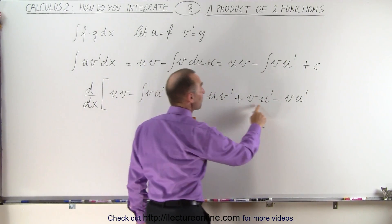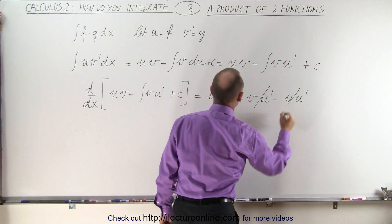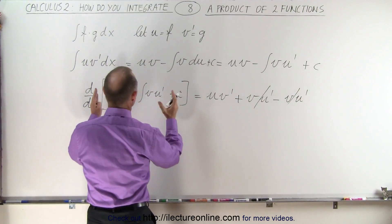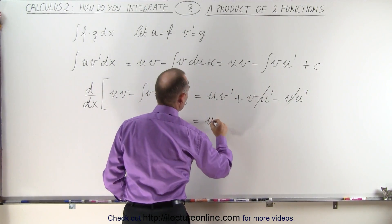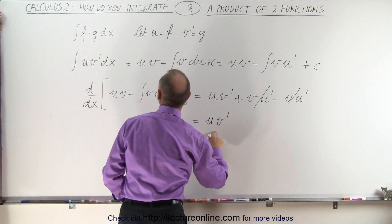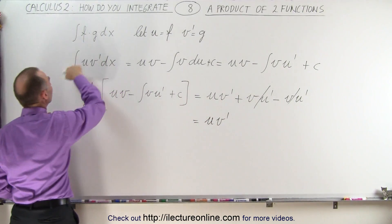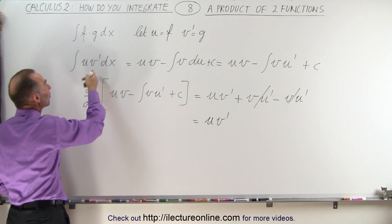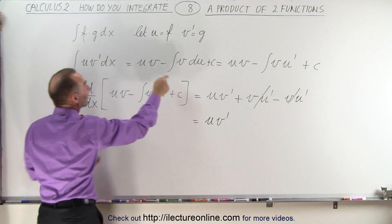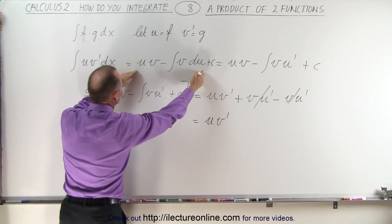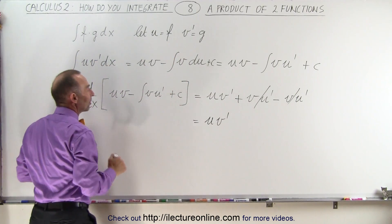Now notice we have a v u prime minus v u prime so that cancels out which means when we take the derivative of this we get back u v prime which is the content of our integral to begin with, which means when we integrate this we get this and when we differentiate this we get back what's inside the integral sign.